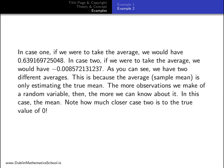Note how much closer case 2 is to the true mean of 0.009, whereas case 1 is further away. This is not accidental. This is because case 2 has more observations than case 1.